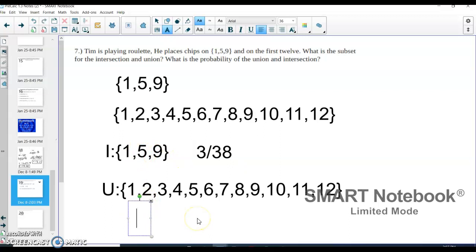For the union, again, it's going to be out of 38 numbers. But we have 1, 2, 3, 4, 5, 6, 7, 8, 9, 10, 11, 12 numbers in there. So our probability would be 12 out of 38 because there's 12 possible out of the 38 total outcomes that could happen. So we have our intersection probability, union, and our probability of that.